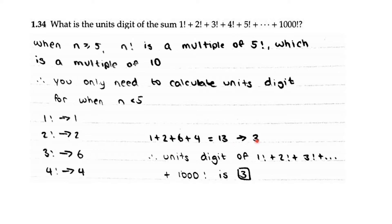So 1 plus 2 plus 6 plus 4 equals 13, so the units digit of 13 is 3. That means the units digit of 1 factorial plus 2 factorial all the way to 1000 factorial is 3.